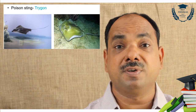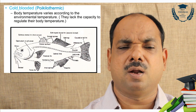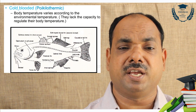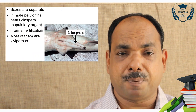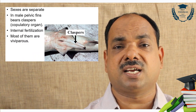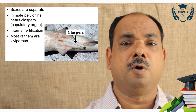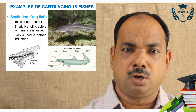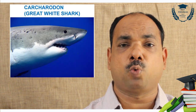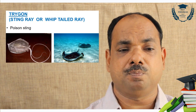Electric features: torpedo has an electric organ which is a modification of muscles. Trigon has a stinging ray. They are cold-blooded organisms with no constant body temperature. Sexes are separate. In cartilaginous species, the pelvic fin bears a genital organ called a clasper. Fertilization is internal, mostly ovoviviparous. Examples: Scoliodon (dogfish), Pristis (sawfish), Carcharodon (great white shark), Trigon (stingray or whip-tailed ray).